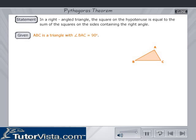Given: ABC is a triangle with angle BAC is equal to 90 degrees. To prove: BC² = AB² + AC².